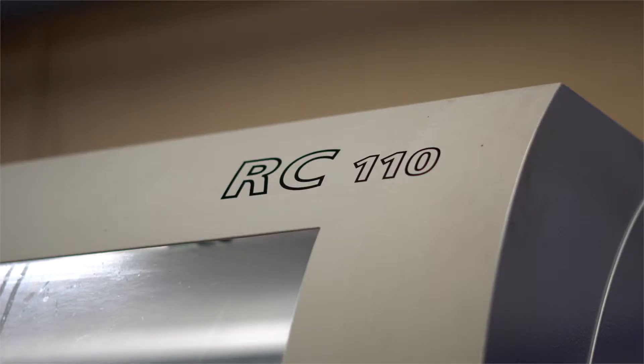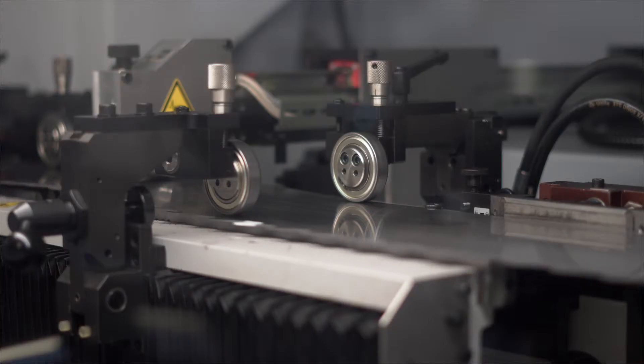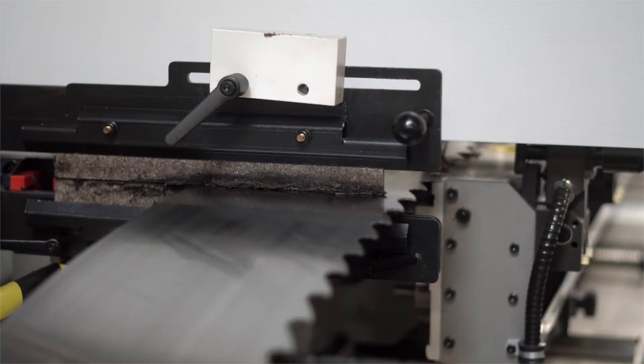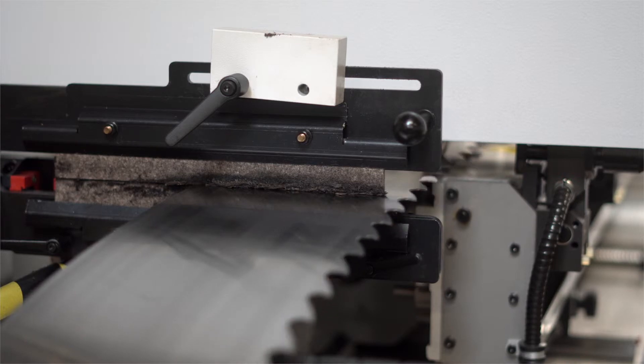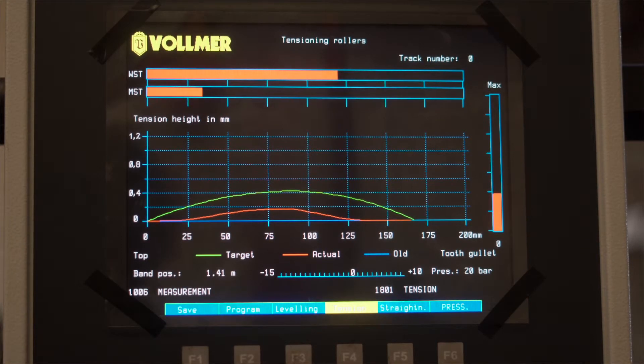The Volma RC110 ensures a consistent and accurate levelling and tensioning of the bandsaw every time. Once the bandsaw is mounted onto the machine, the blade parameters are entered into the control panel.